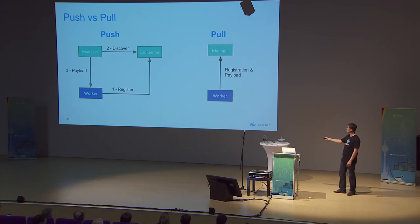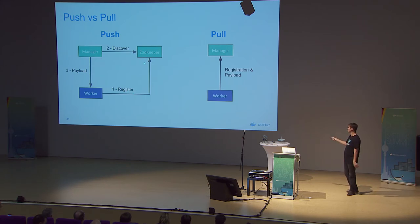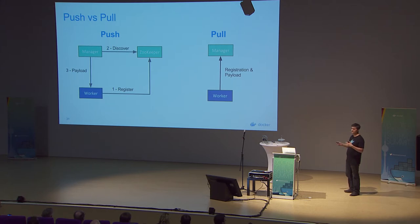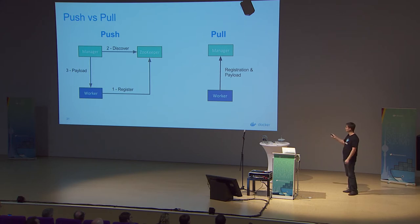In the push model, a worker registers to a discovery system like ZooKeeper. The manager polls ZooKeeper to discover nodes — ZooKeeper returns a list of IPs and ports so the manager can reach out to workers directly. In the pull model, the worker connects to the manager, registers itself, announces its memory and CPU, and says it needs work. The work flows down that same path.